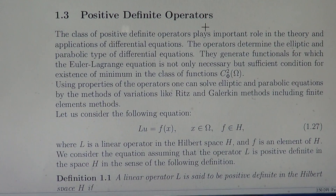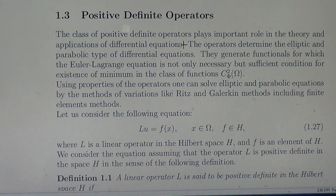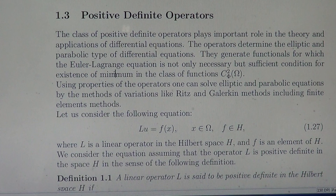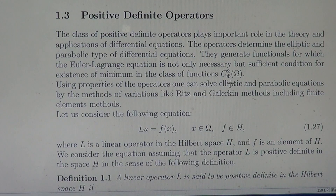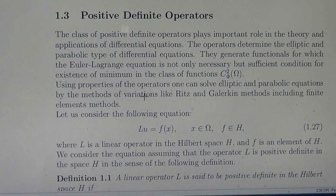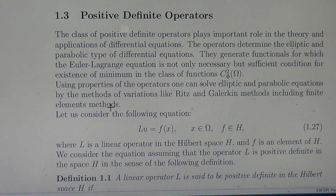Positive definite operators play an important role in the theory and applications of differential equations. These operators determine the elliptic and parabolic type of differential equations. They generate functionals for which the Euler-Lagrange equation is not only a necessary condition, but also a sufficient condition for the existence of a minimum in the class of functions C2-phi on omega. Using properties of these operators, one can solve elliptic and parabolic equations by variational methods such as Ritz's method, Galerkin's method, including finite element methods.